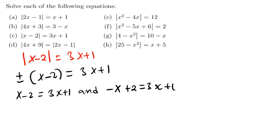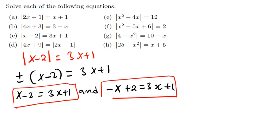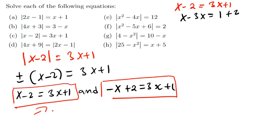Solving the first equation: x plus 2 equals 3x plus 1. Shifting x to one side: x minus 3x equals 1 minus 2, so negative 2x equals 3, divide both sides by negative 2, giving x equals negative 3 over 2.